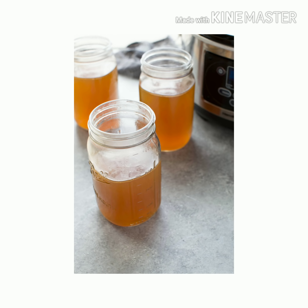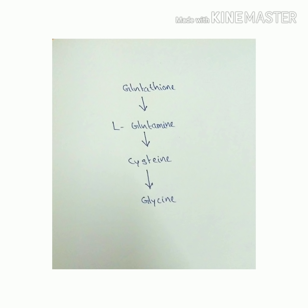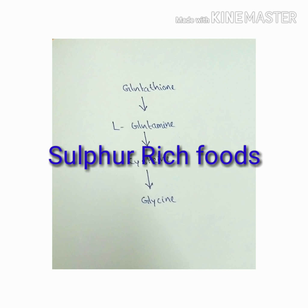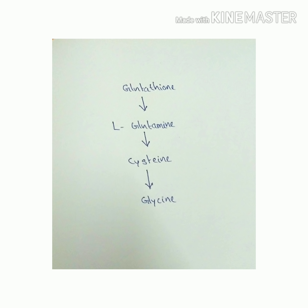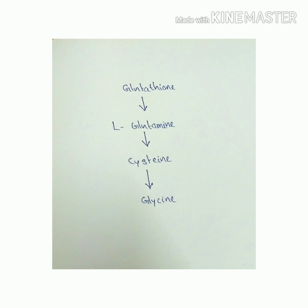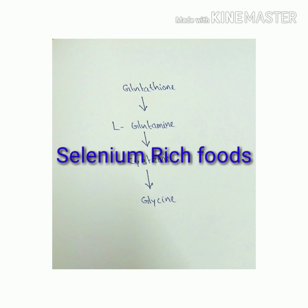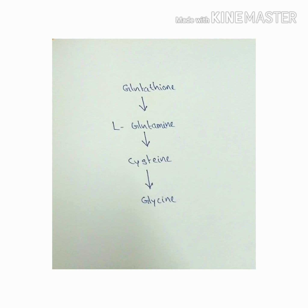You can get these amino acids from bone broth. Good food sources include beef, poultry, fish, and green vegetables such as broccoli and cauliflower. You can also get them from strawberries, spinach, and asparagus, which help support glutathione production.